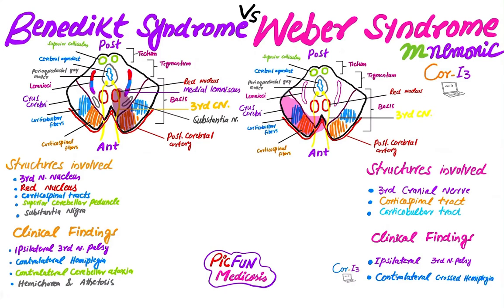In Benedict syndrome, the structures involved are the Edinger-Westphal nucleus of the third cranial nerve, the third cranial nerve itself, the red nucleus, the substantia nigra, and the corticospinal tracts.